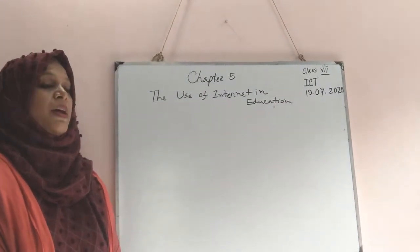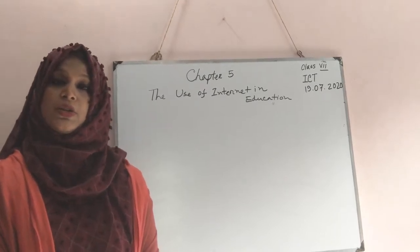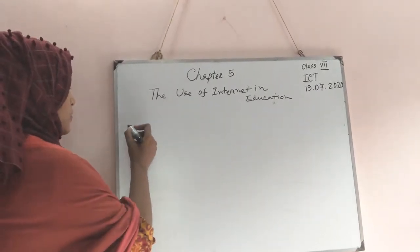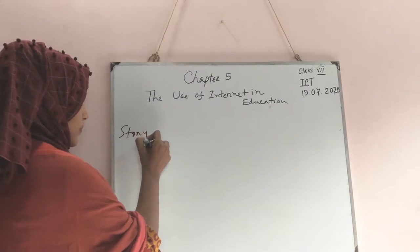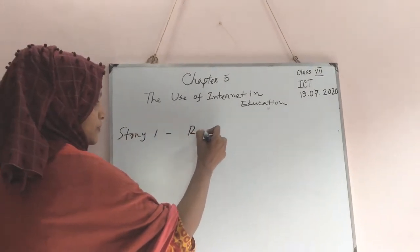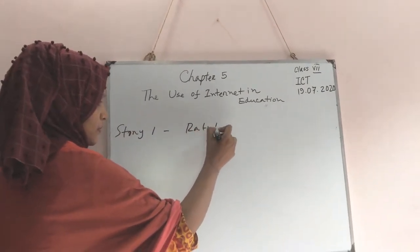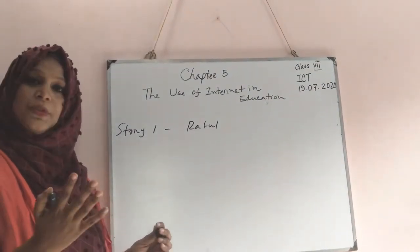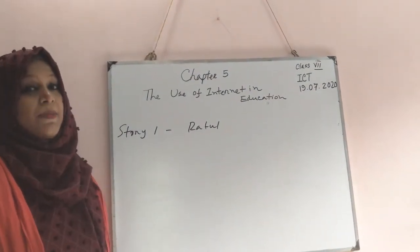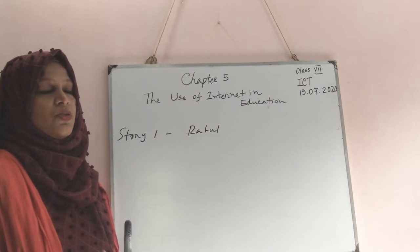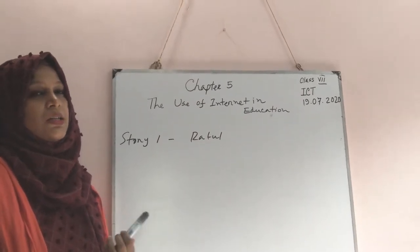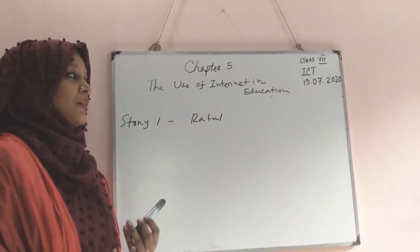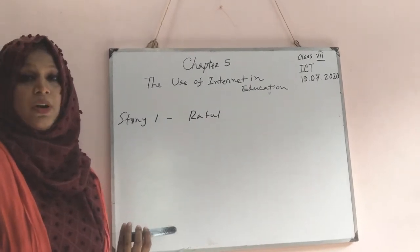Internet plays an important role in the education sector. Story 1: Ratul. What happened to him? Ratul lost his math book. He became very frustrated, because without a textbook it is very tough to take preparation properly. And his examination is not so far away.